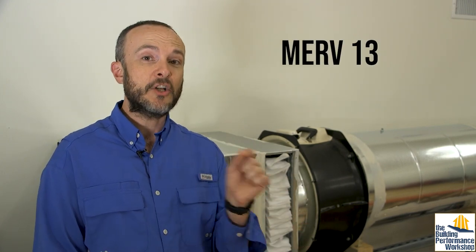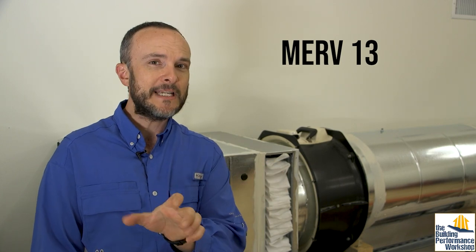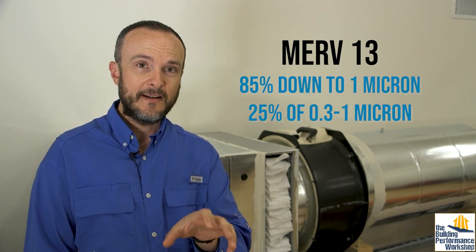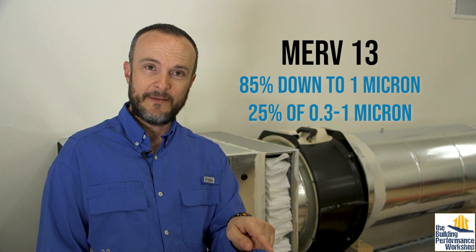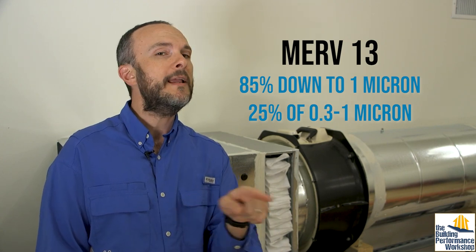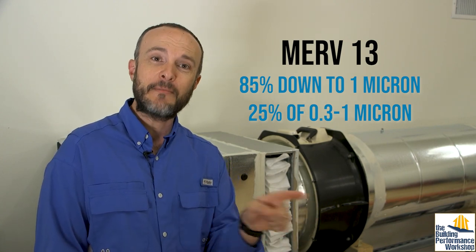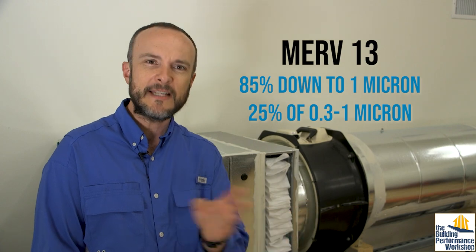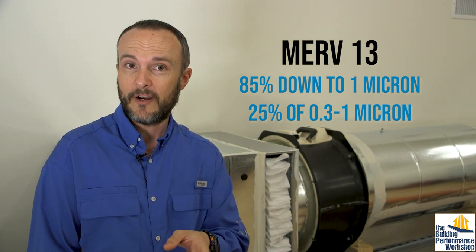Once you get to MERV 13, that's where you start really tackling those smaller things. So MERV 13 is going to tackle 85% of the particles down to one micron. And it's also going to grab 25% of the particles that are smaller than that, about 300 nanometers to a thousand nanometers, which is one micron.